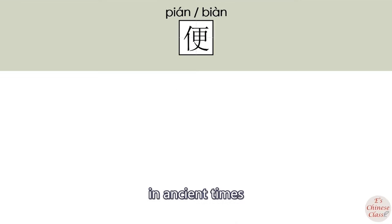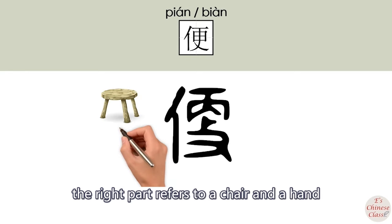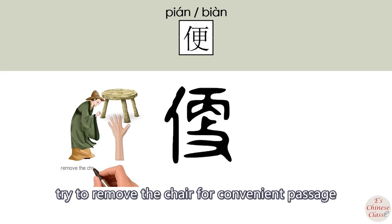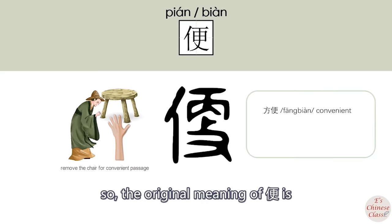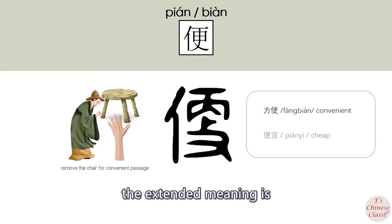In ancient times, 便 was written differently. The right part refers to a chair and a hand, and the left part refers to a person trying to remove the chair for convenient passage. So the original meaning of 便 is 'convenient' (方便). The extended meaning is 'cheap' (便宜).